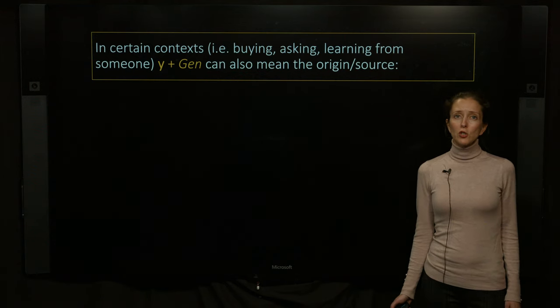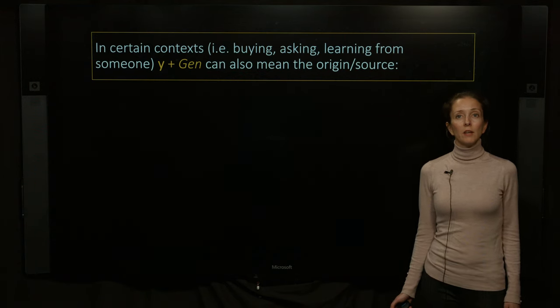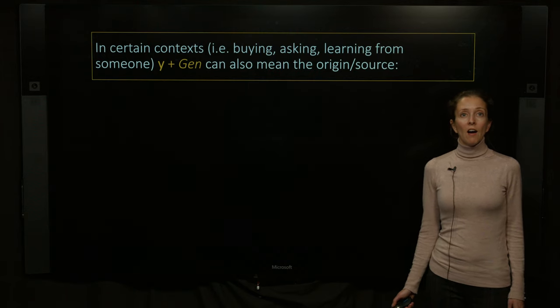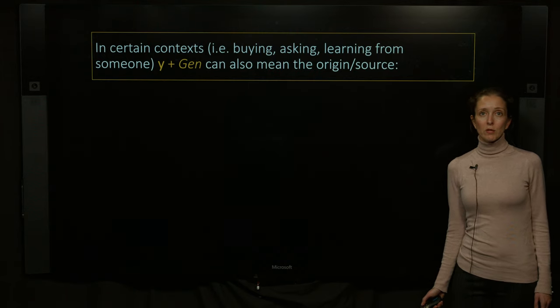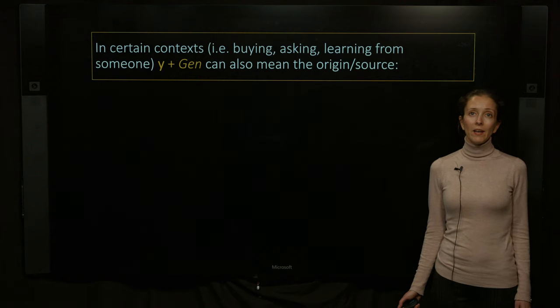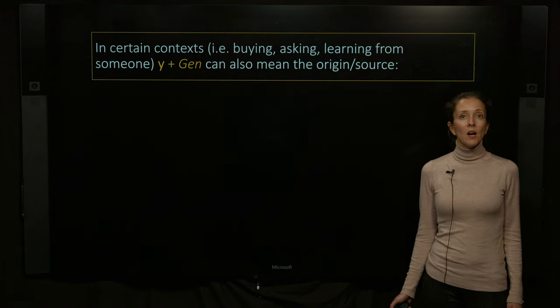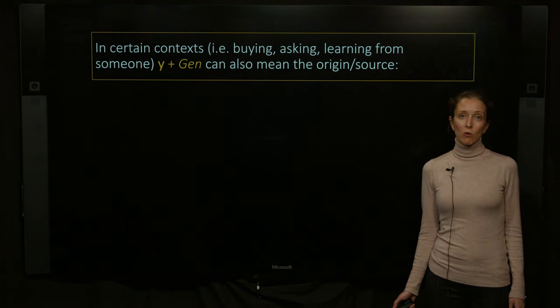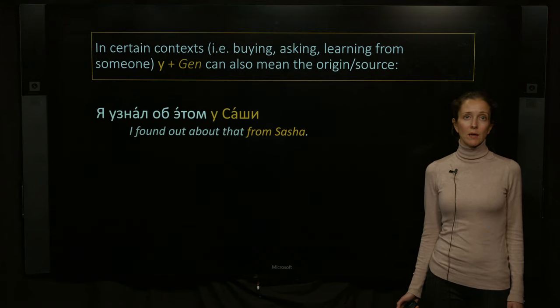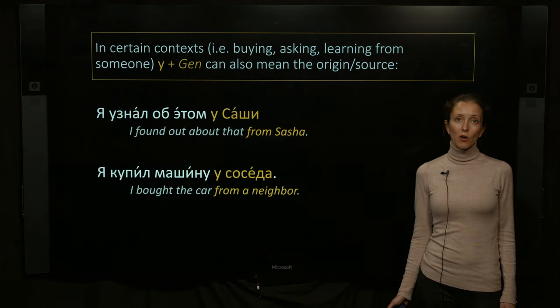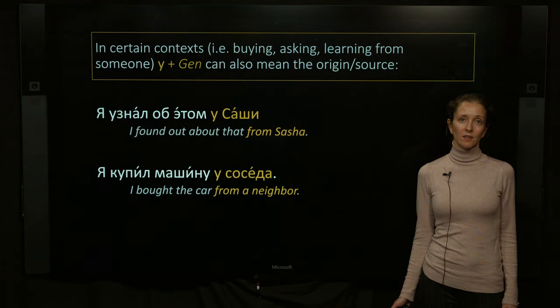Now, you know that the preposition у with the genitive case can mean either proximity or can be used in to have constructions. However, in some contexts, for example, when you talk about buying or asking or learning something from someone, it can also mean the origin or source. For example, я узнал об этом у Саши. Я купил машину у соседа.